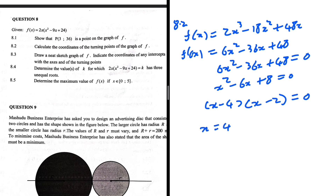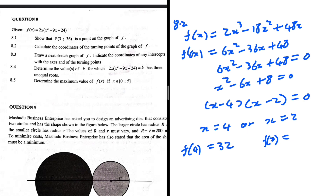Factorising: factors of 8 that add to -6 are -4 and -2, giving (x - 4)(x - 2) = 0, so x = 4 or x = 2. These are the x-coordinates of the turning points. We now evaluate f(4) = 2(4)³ - 18(4²) + 48(4) = 32, and f(2) = 40.